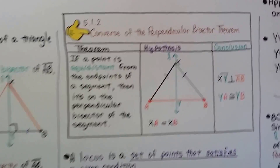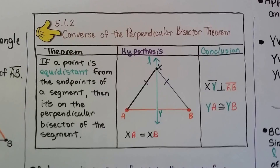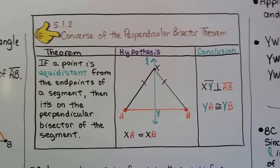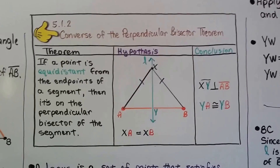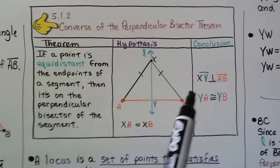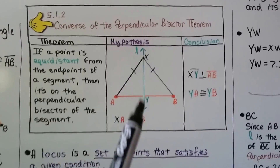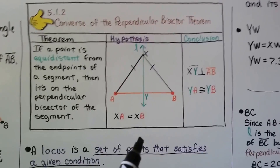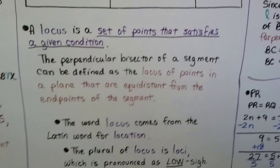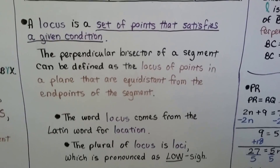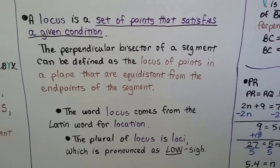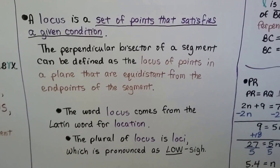Here's the converse of the Perpendicular Bisector Theorem. It says if a point is equidistant from the endpoints of a segment, then it's on the perpendicular bisector of the segment. So if XA equals XB, our conclusion is that XY is perpendicular to AB and YA is congruent to YB. A locus is a set of points that satisfies a given condition, and the perpendicular bisector of a segment can be defined as the locus of points in a plane that are equidistant from the endpoints of the segment.